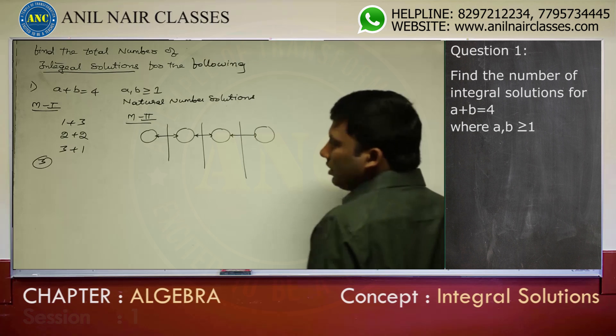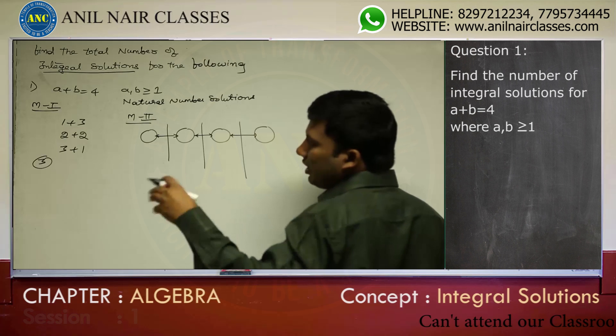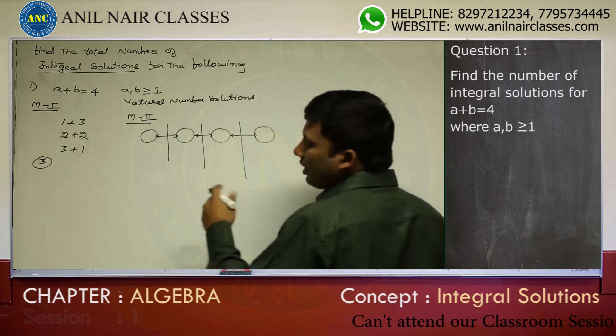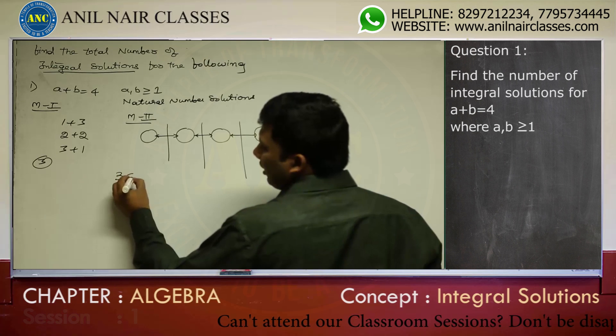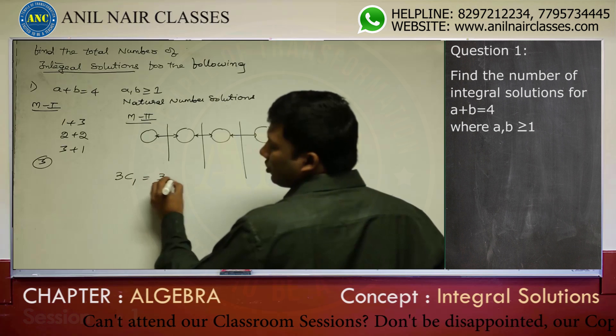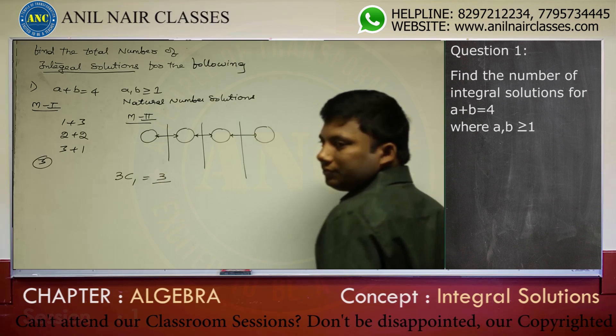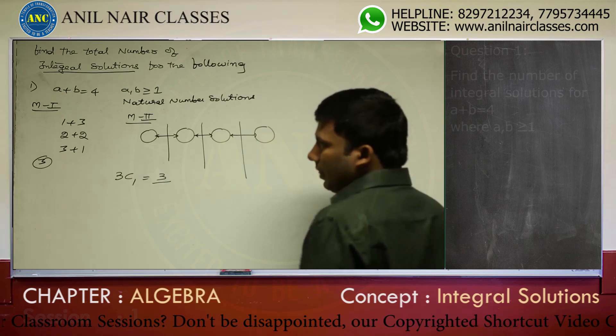That means, out of 4 bars placed in a line, there are 3 spaces. Selecting any one space, I am getting one solution. 3C1 is 3.